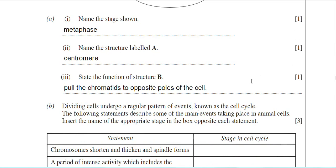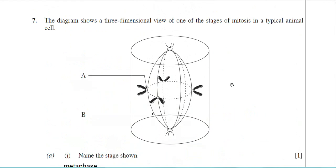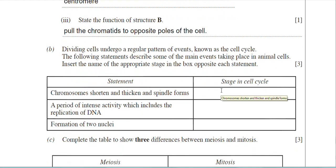That's question A3 done. Three hopefully easy marks. There's nothing really technical about this question. Part B: dividing cells undergo a regular pattern of events known as the cell cycle. The following statements describe some of the main events taking place in animal cells. Insert the name of the appropriate stage in the box opposite each statement.